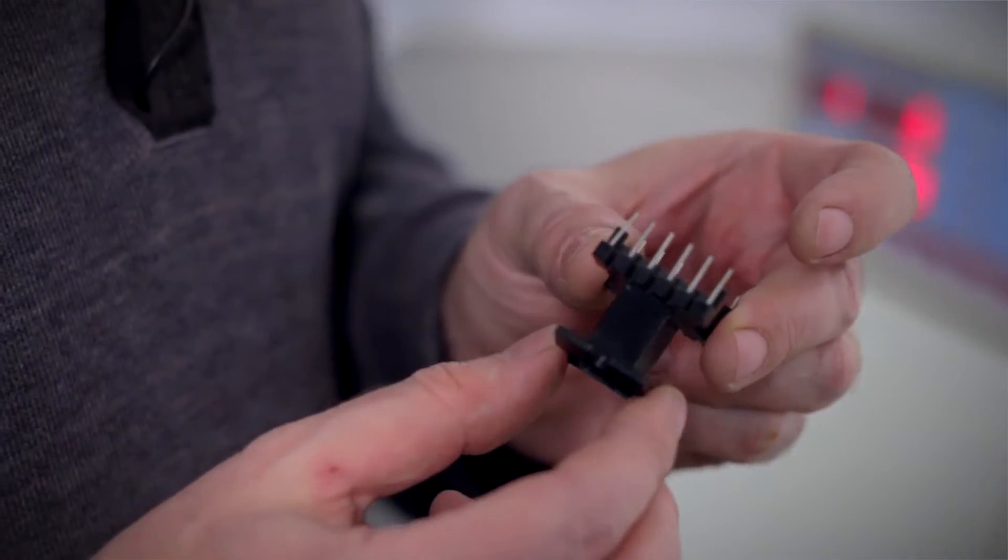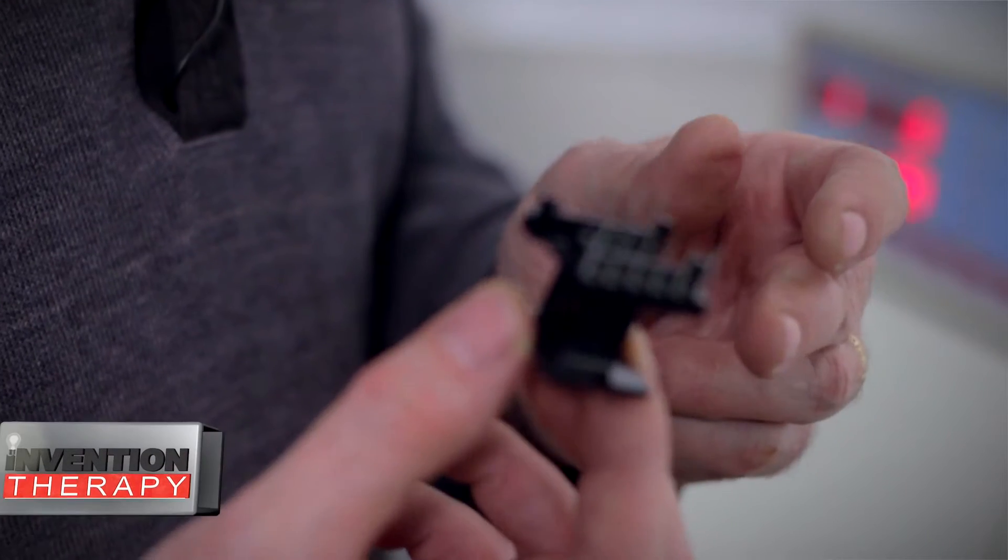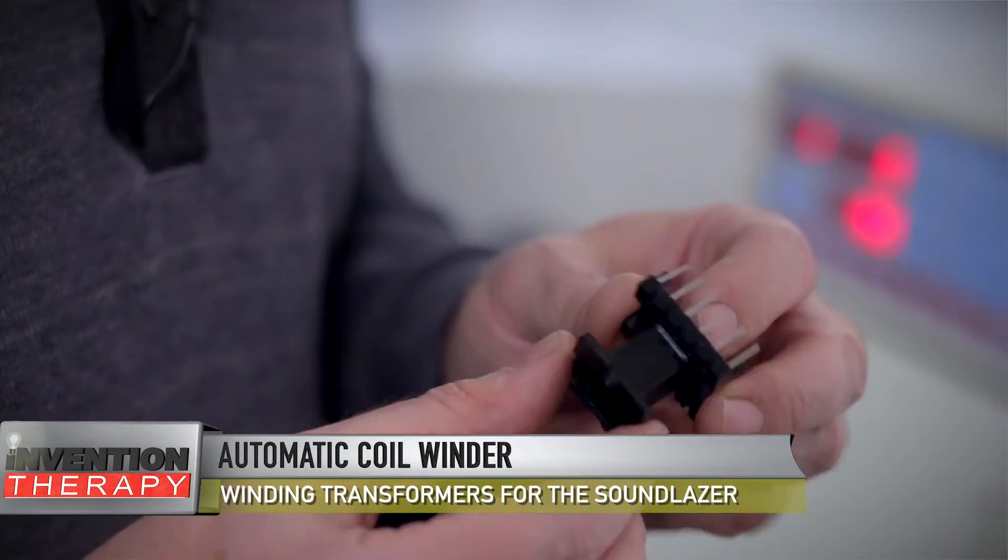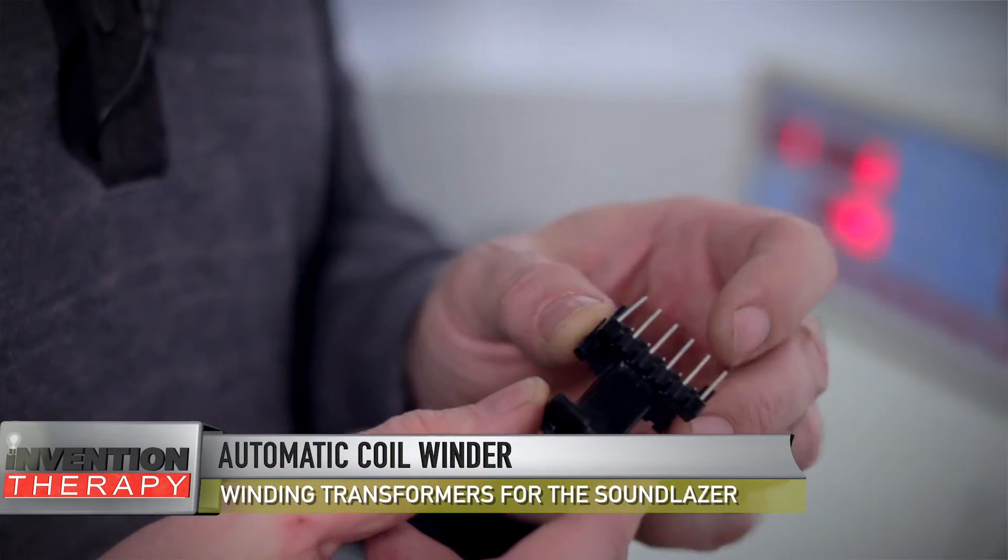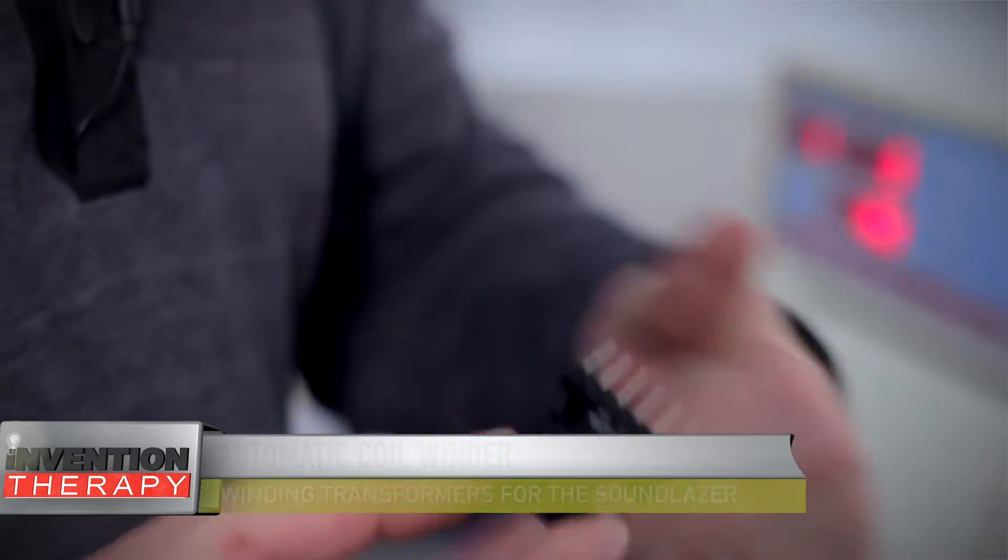A transformer starts its life as a bobbin. This is what's known as a bobbin, and all of this is a plastic core that allows you to wind wire around it.